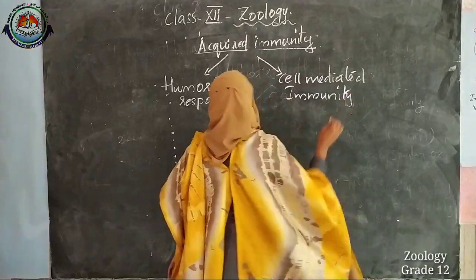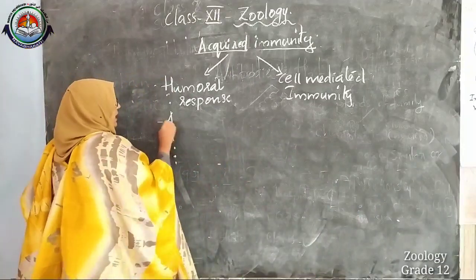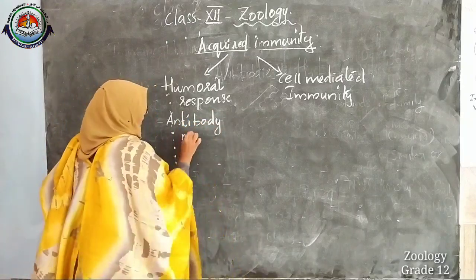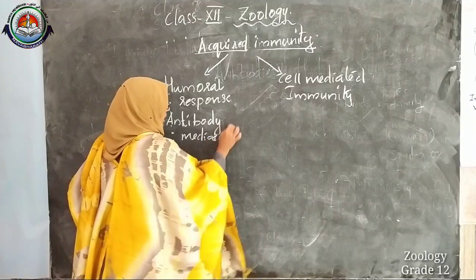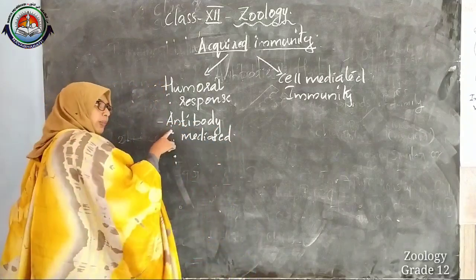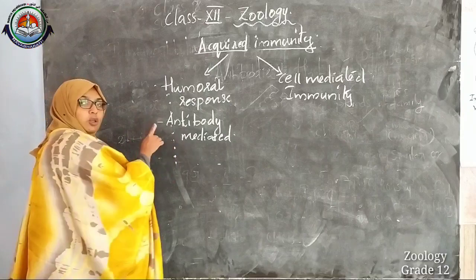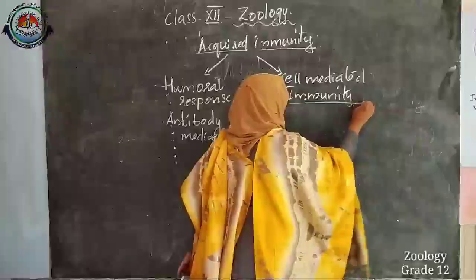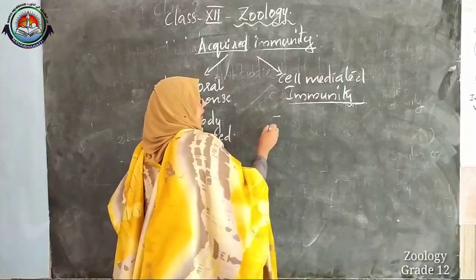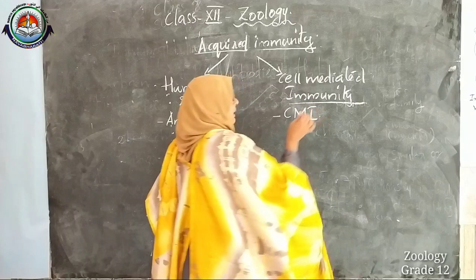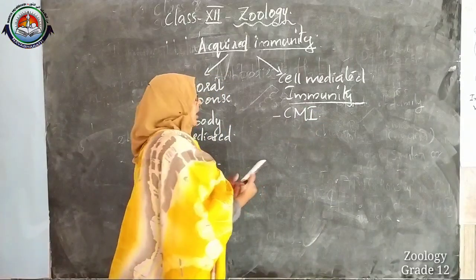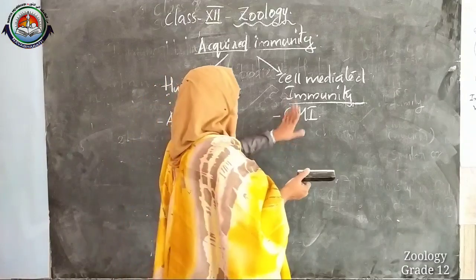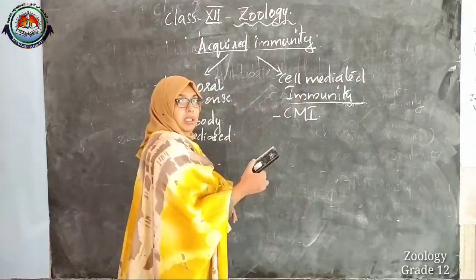Humoral response is otherwise known as antibody mediated immunity — antibodies are produced according to the pathogen entering the body. Cell mediated immunity is otherwise known as CMI. Sometimes a question may ask you to give a short note on CMI — CMI is the same as cell mediated immunity.